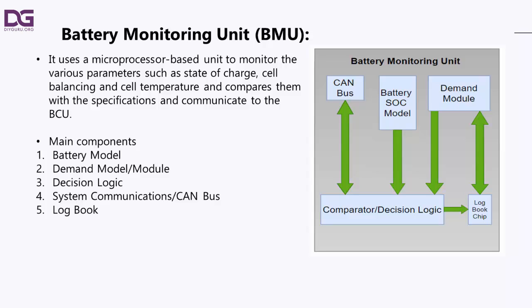HEVs and hybrids have an alternative get-you-home source of power before the battery becomes completely discharged. The problem of losing all power when a single cell fails can be mitigated, at the cost of adding four more expensive contactors, which effectively split the battery into two separate units. If a cell should fail, the contactors can isolate and bypass the half of the battery containing the failed cell.